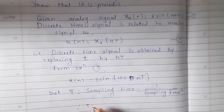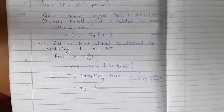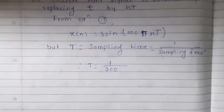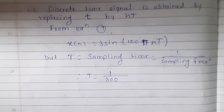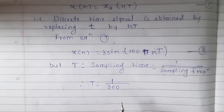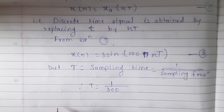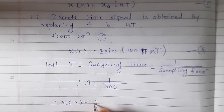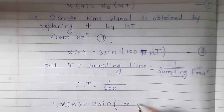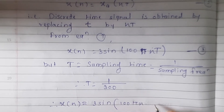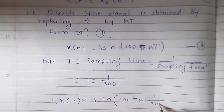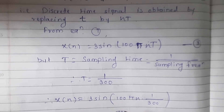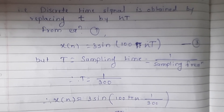So T = 1/300, which is equation 3. Now we put this value into the equation. So x(n) = 3sin(100πn × 1/300), which simplifies to x(n) = 3sin(π/3 · n).